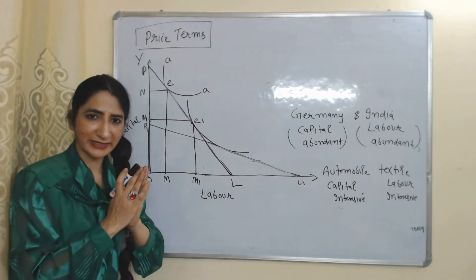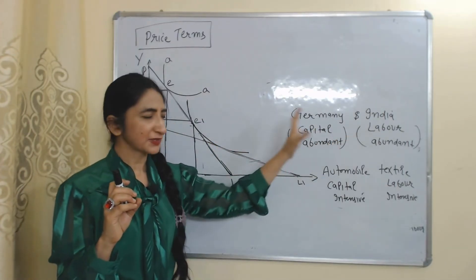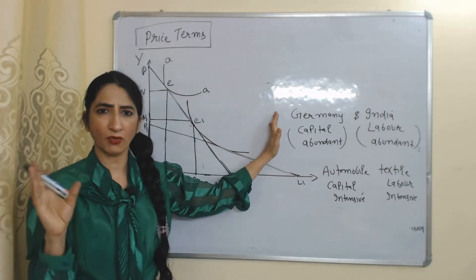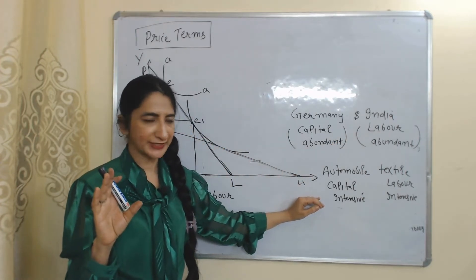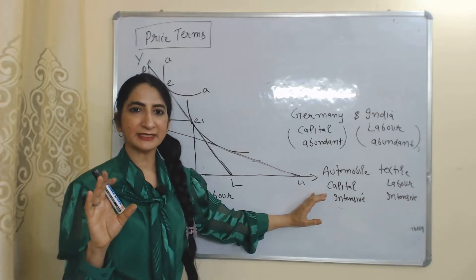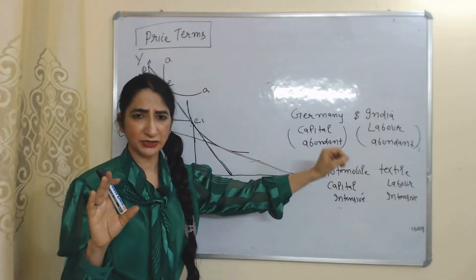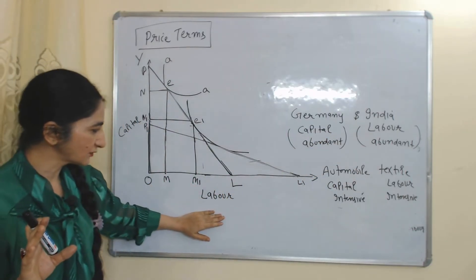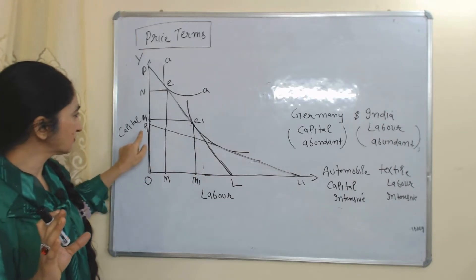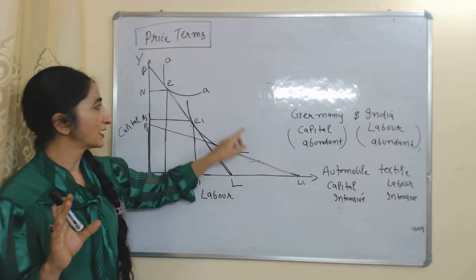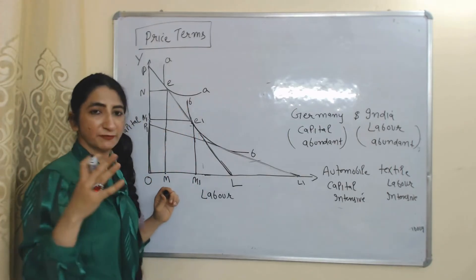Now with the help of a diagram we will understand price terms. We assume two countries — Germany and India. Germany is a capital-abundant country and India is a labor-abundant country. We also assume two commodities: automobiles and textiles. Automobiles are capital-intensive goods, meaning their production requires more capital. Textiles are labor-intensive goods, requiring more labor. In this diagram, the X-axis shows labor and the Y-axis shows capital. PL is the factor price line of Germany, P1L1 is the factor price line of India, and we have two isoquants AA and BB.